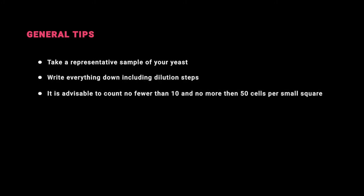Take a representative sample of your yeast. Write everything down including dilution steps. It is advisable to count no fewer than 10 and no more than 50 cells per square. Get a manual clicker to reduce the chance of miscounts. Get at least two if you're doing viability as well.